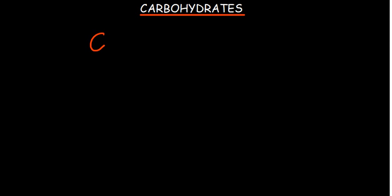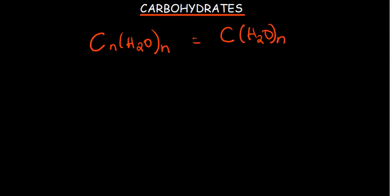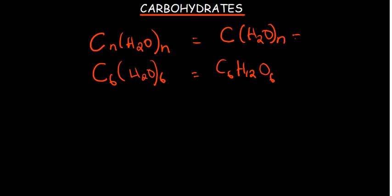The general formula for carbohydrates is Cₙ(H₂O)ₙ — in some books you may find it written as Cₙ(H₂O)ₙ as well, which is the same thing. If you want to find the carbohydrates that have six carbons, N represents the number of carbons, so this would be C₆(H₂O)₆, giving you C₆H₁₂O₆ — the same result from either formula version.